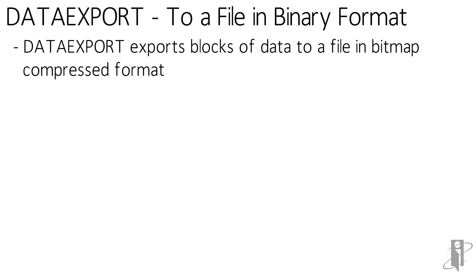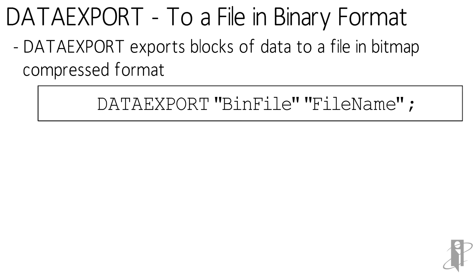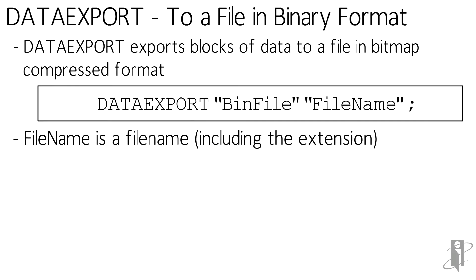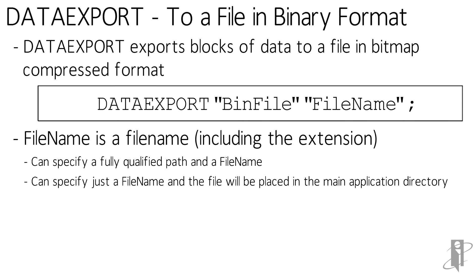Data export bin is going to export out that data from the database in bitmap compressed format. File name is the only one we really have to care about — what is the file and where do we want it to put that file. You do need to remember to put the extension on it, so it'd be something like filename.txt, although technically it's not a txt file, so filename.odd, I guess. If you don't give it a path, it's going to stick it in the main application directory.